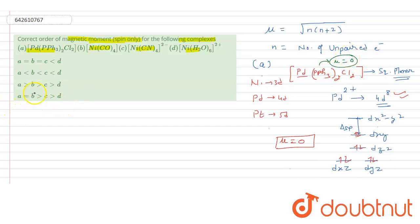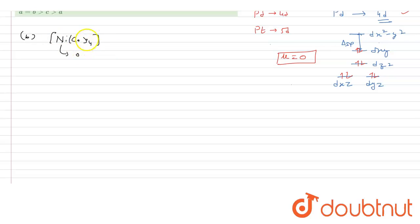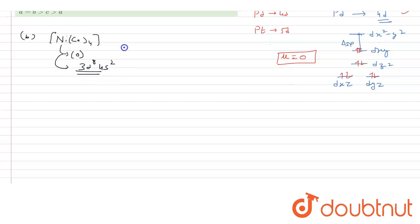Now moving to the second complex, [Ni(CO)₄], tetracarbonyl nickel. Here nickel is in zero oxidation state since carbonyl is a neutral ligand. Carbonyl is also a strong field ligand because it is a pi-acceptor ligand.